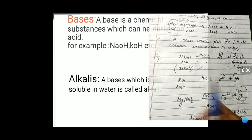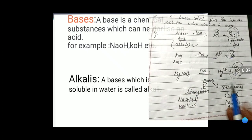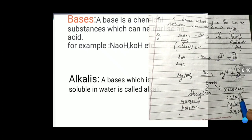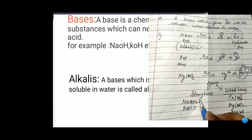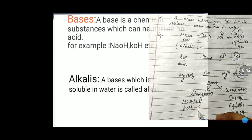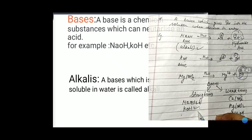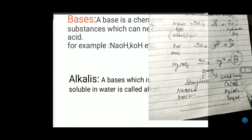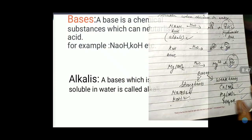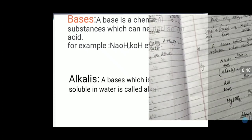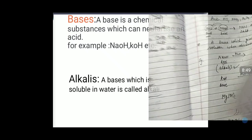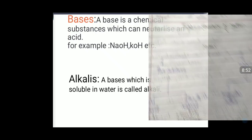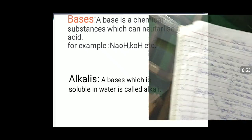Like acids, bases are also of two types: strong and weak. NaOH and KOH are strong bases. Calcium hydroxide, magnesium hydroxide, and ammonium hydroxide are weak bases. Now let's look at the chemical properties of bases.